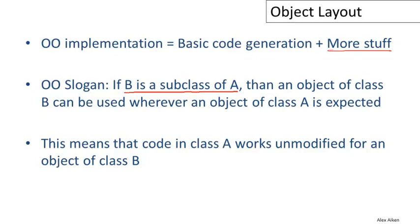What this means for code generation is that the code we generate for class A — the code we produce for methods in class A — has to work unmodified for an object of class B. Keep in mind that when we compile class A, we may not even know all the subclasses of A; those may not even have been defined yet. In the future, some programmer may come along, define a subclass of A, and our compiled version of A will have to work with that new subclass.